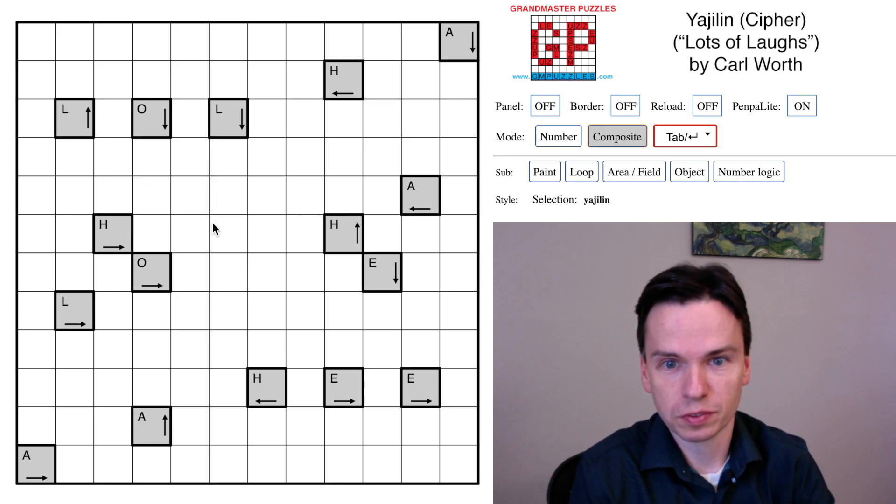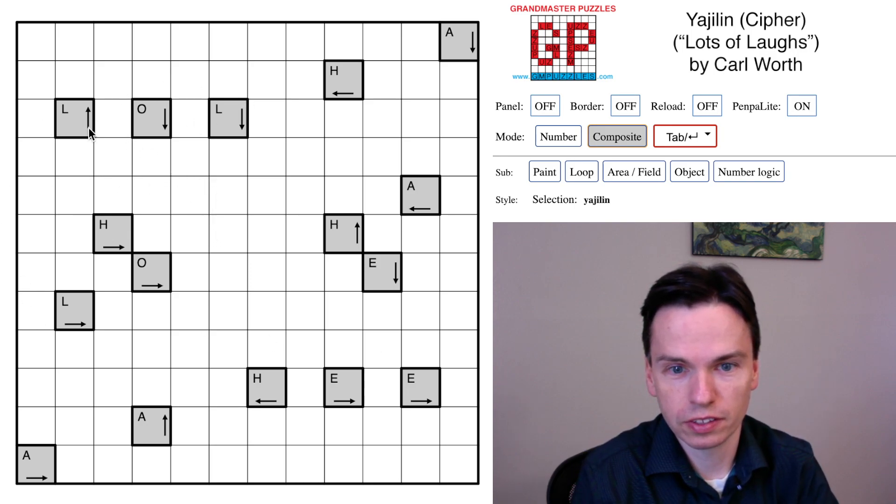We're here to solve this Yagelin cipher puzzle by Carl Wirth. Its theme is lots of laughs. It's got LOL, it's got HE, it's got HO, it even maybe has HA on the grid.